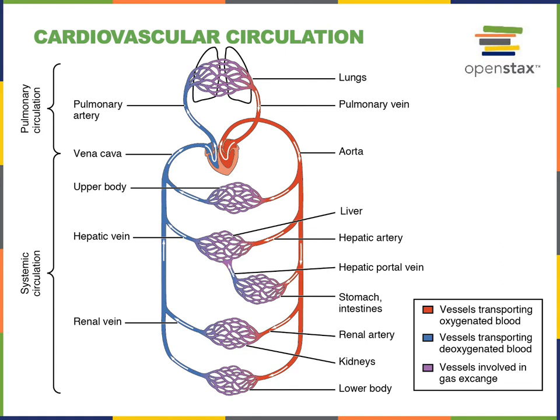Arteries branch into smaller and smaller arterioles. Arterioles then deliver blood into capillaries, so arterioles are the smallest arteries. Because they have a relatively small diameter but receive blood coming from larger arteries at relatively high pressure, the arterioles play a major function in regulating blood pressure and regulating the distribution of blood to different capillary beds. They are the primary resistance vessels critical for slowing down blood flow, and as blood flows through the arterioles into the capillaries, blood pressure drops.